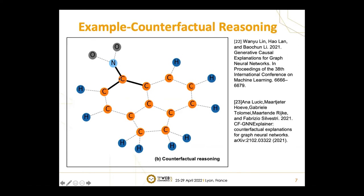On the other hand, methods based on counterfactual reasoning seek a subgraph whose information is necessary: if this information is removed, the prediction should be different. Therefore, counterfactual reasoning only extracts the most crucial information. However, because of this, counterfactual reasoning may only extract a small subset of the real explanation — in this case, the extracted subgraph only contains three edges. These edges, if removed, will indeed break the nitro binding structure and lead to a different prediction, but such an explanation doesn't cover enough complete information.